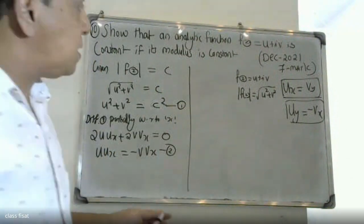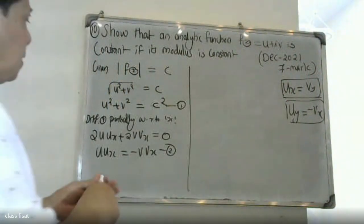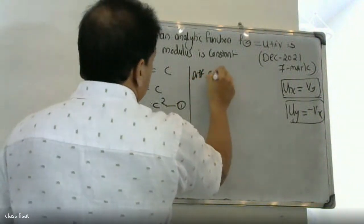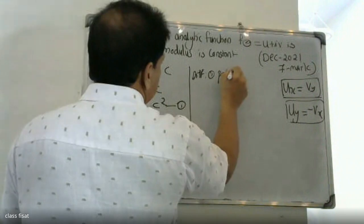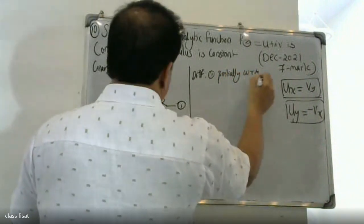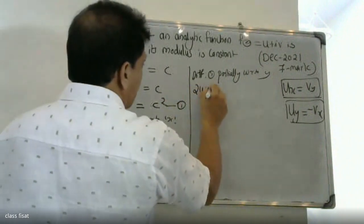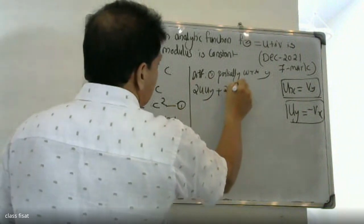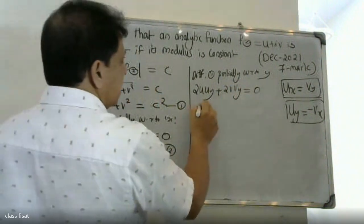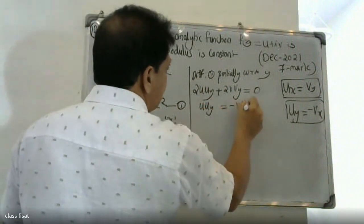Now differentiating equation 1 partially with respect to y: 2u·uy + 2v·vy = 0. Therefore, u·uy = -v·vy. This is equation 3.